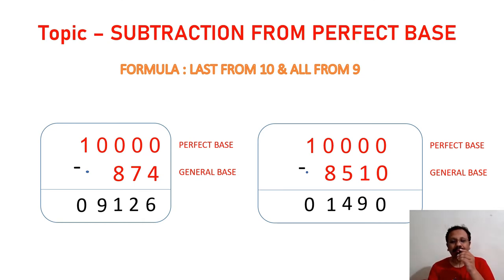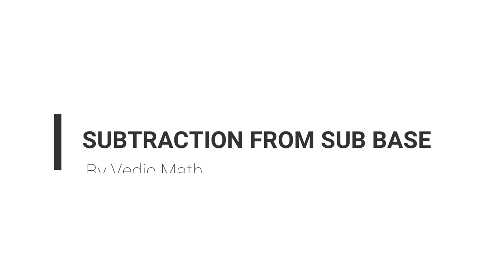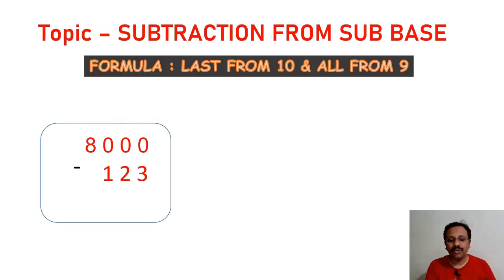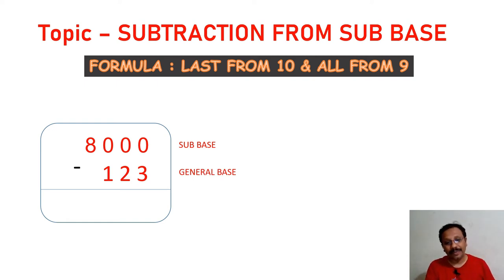This is the simplest subtraction without borrowing. Now let's learn how to subtract any number from a sub-base. The formula is the same: last from 10 and all from 9. Example: 8000 minus 123. Here 8000 is a sub-base because it starts with a digit other than 1 followed by zeros. 123 is the general base.